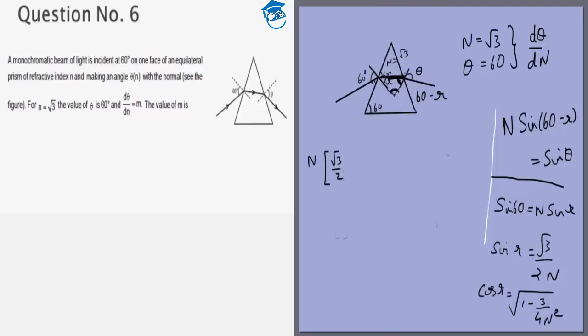So we get the equation n times sin of 60 that is root 3 by 2 cos of r that is root of 1 minus 3 by 4n square, minus cos of 60 that is 1 by 2 times sin of r. So root 3 by 4n equals sin theta.